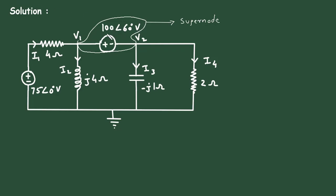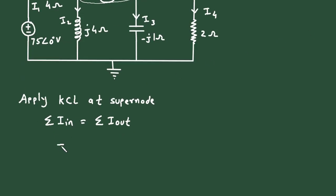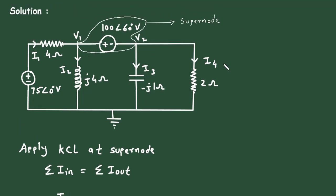Now we will apply KCL — that is Kirchhoff's Current Law — at this super node. According to KCL, the summation of all the currents entering a node is equal to the summation of all the currents leaving the node. Here at this node, the entering current is I1, and the leaving currents are I2, I3, and I4.